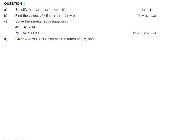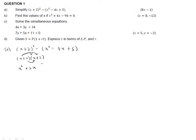Question 1a: simplify (x + 2)² minus (x² - 4x + 5). We will first expand (x + 2)², which is (x + 2) multiplied by (x + 2). x multiplied by x gives x², x multiplied by 2 gives 2x, 2 multiplied by x gives 2x, and 2 multiplied by 2 gives 4.